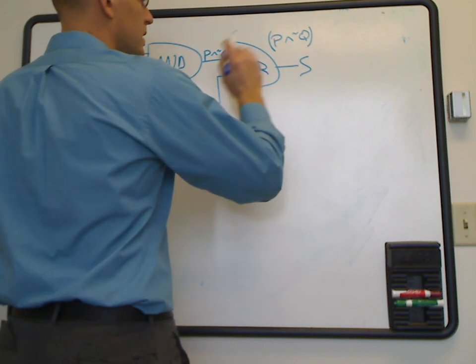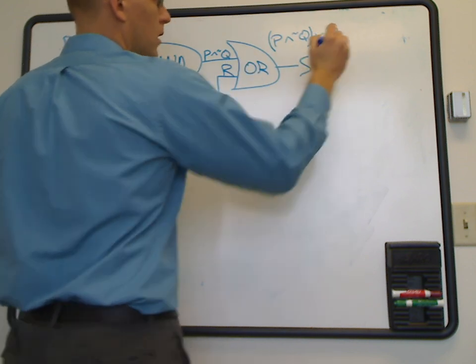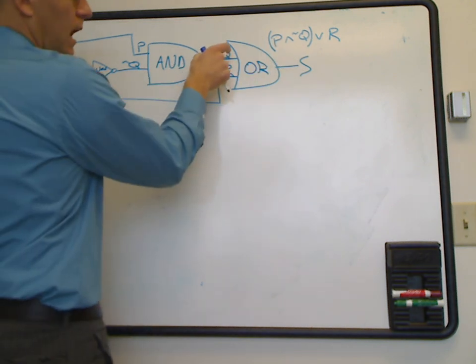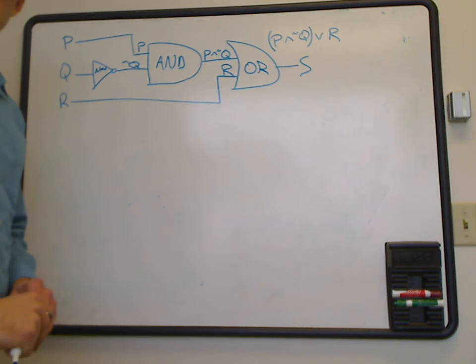And this is ORed with R. Now, I put parentheses around this because it's this entire signal that's ORed with R. So that's why we want to make sure that that's the way that we do this.